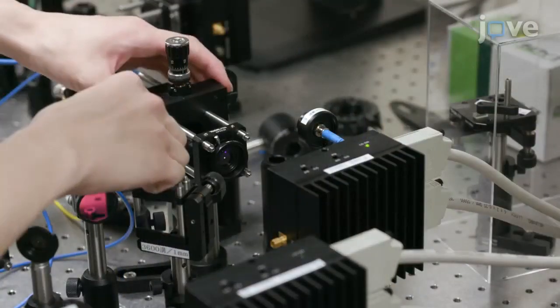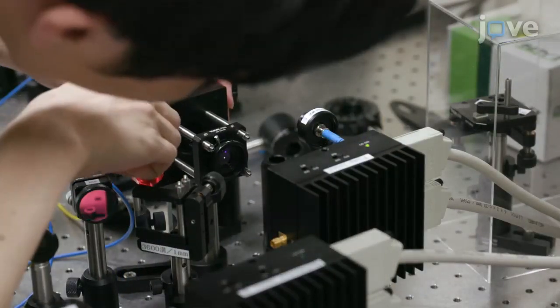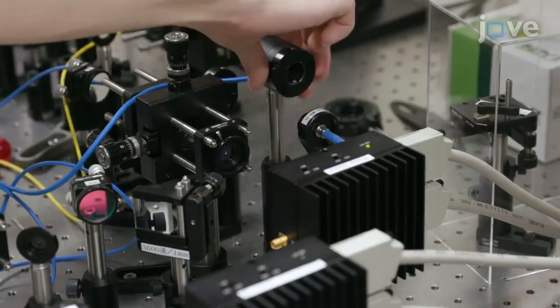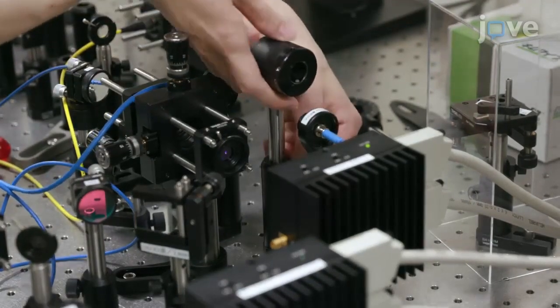Next, couple the laser to a polarization-maintaining optical fiber. Direct the fiber to a power meter and adjust the coupler screws to maximize the output power.